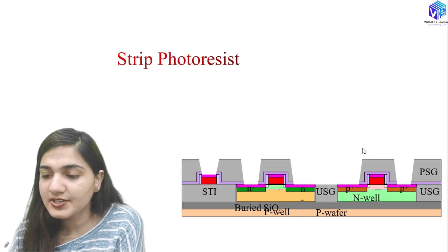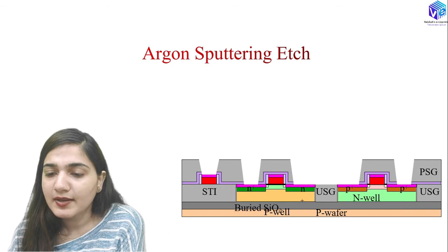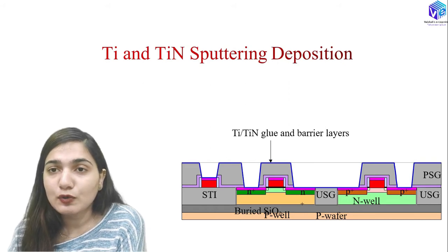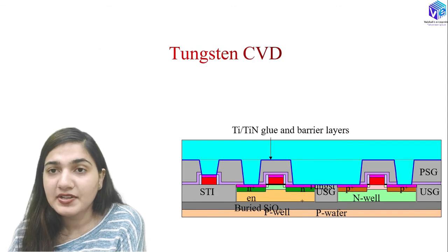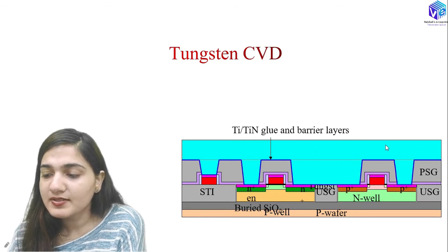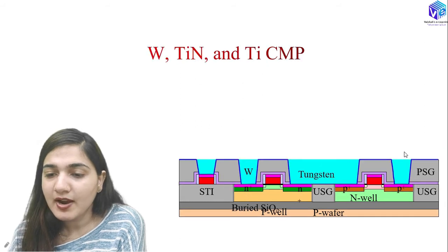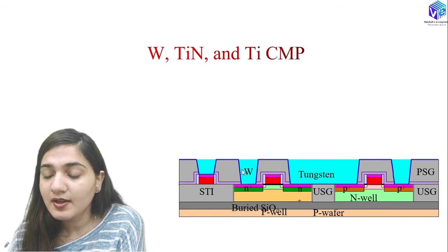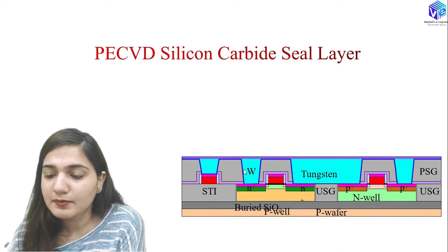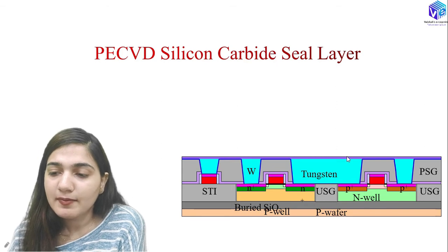After stripping the photoresist, argon sputtering etch is done, then titanium and titanium nitride sputtering deposition acts as a barrier/glue layer. Tungsten CVD is then used for bulk tungsten deposition inside the contact holes. After tungsten, titanium nitride, and titanium CMP, the tungsten fills the desired local interconnection contacts between neighboring components.